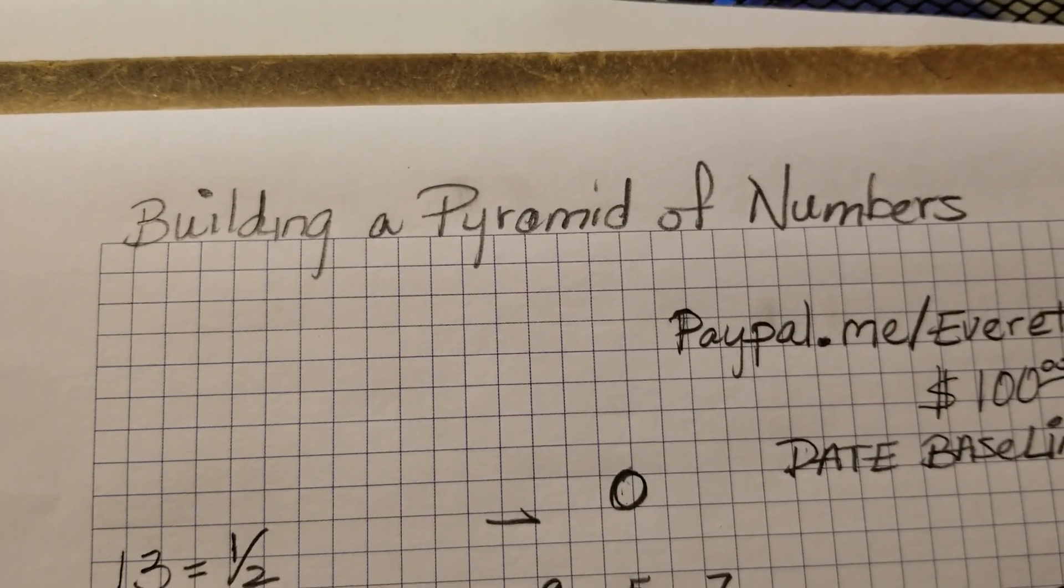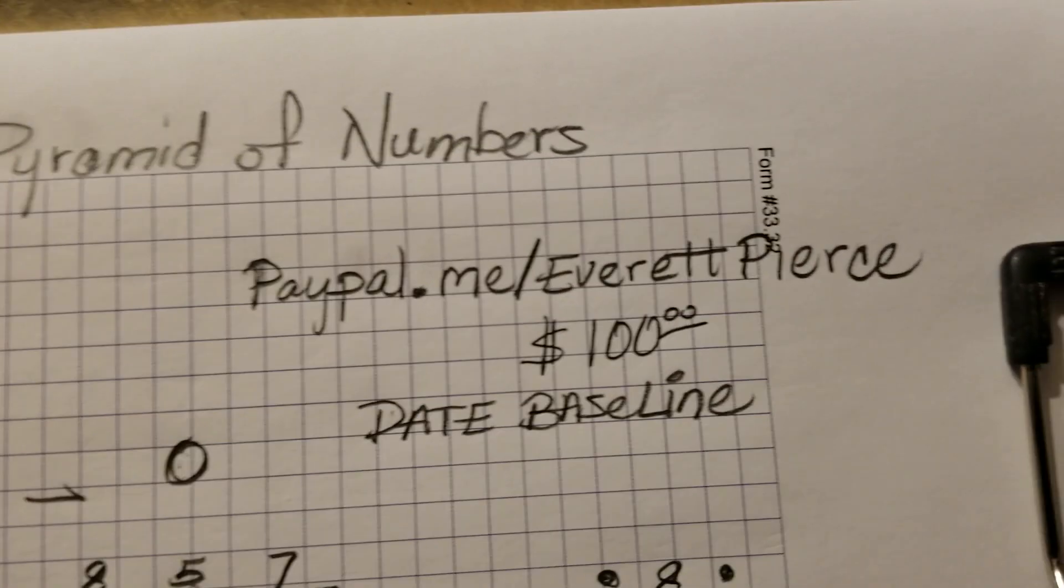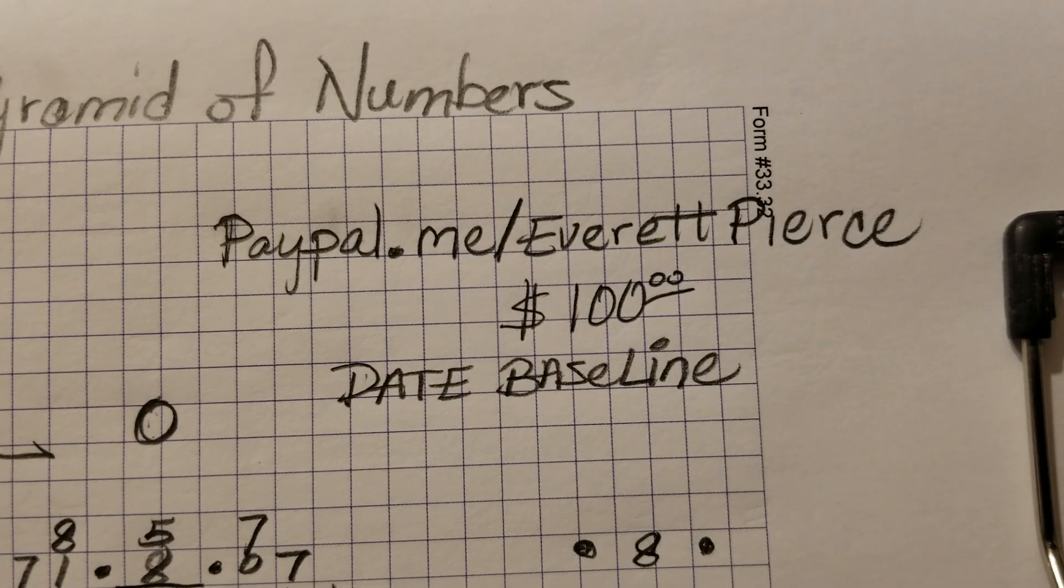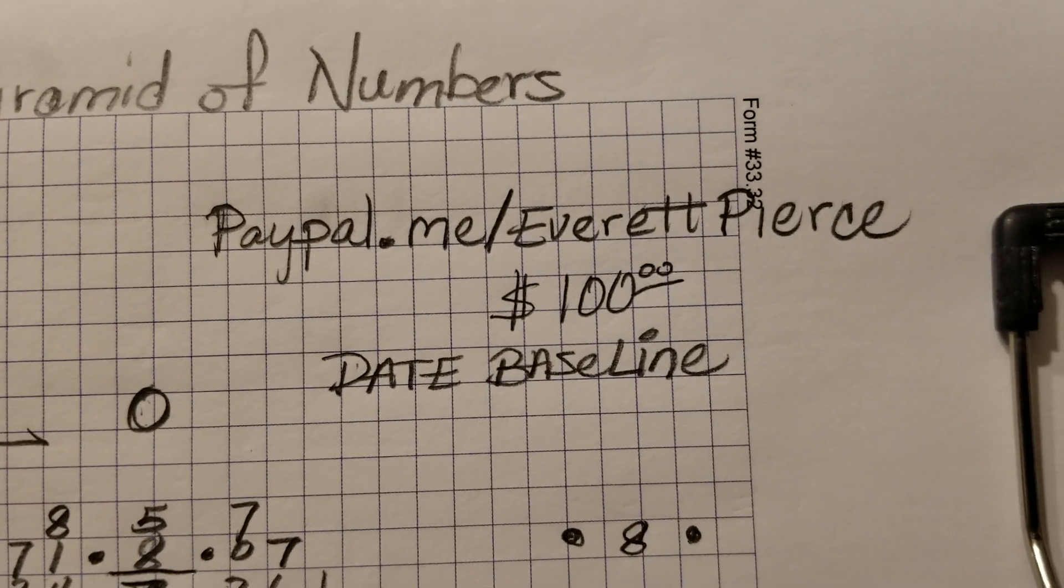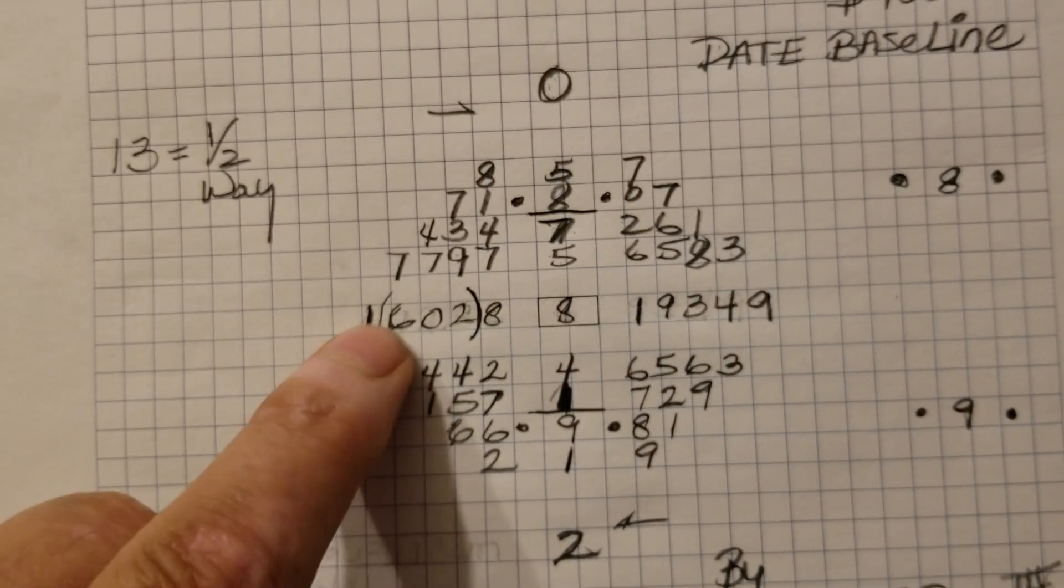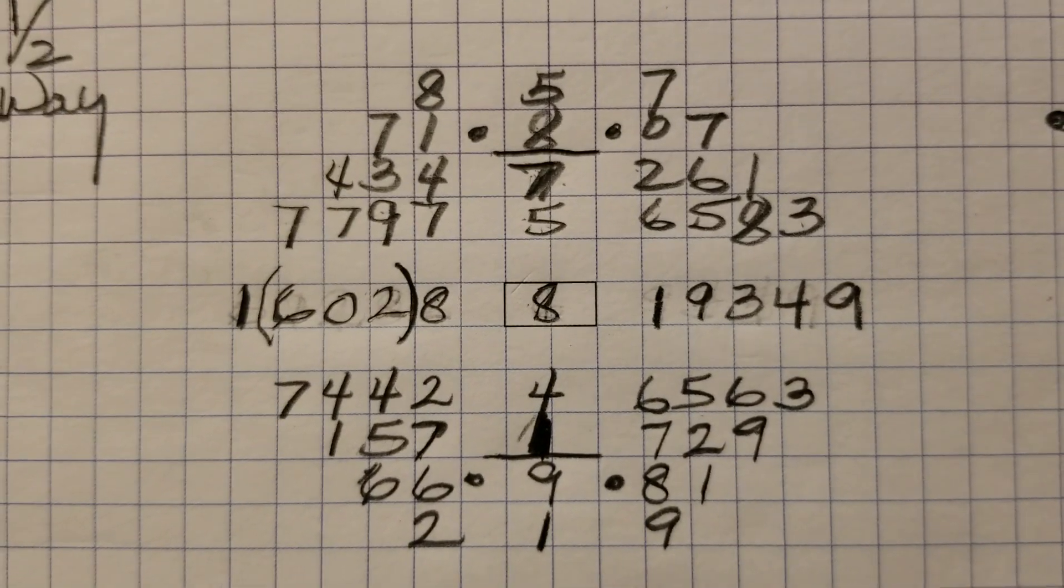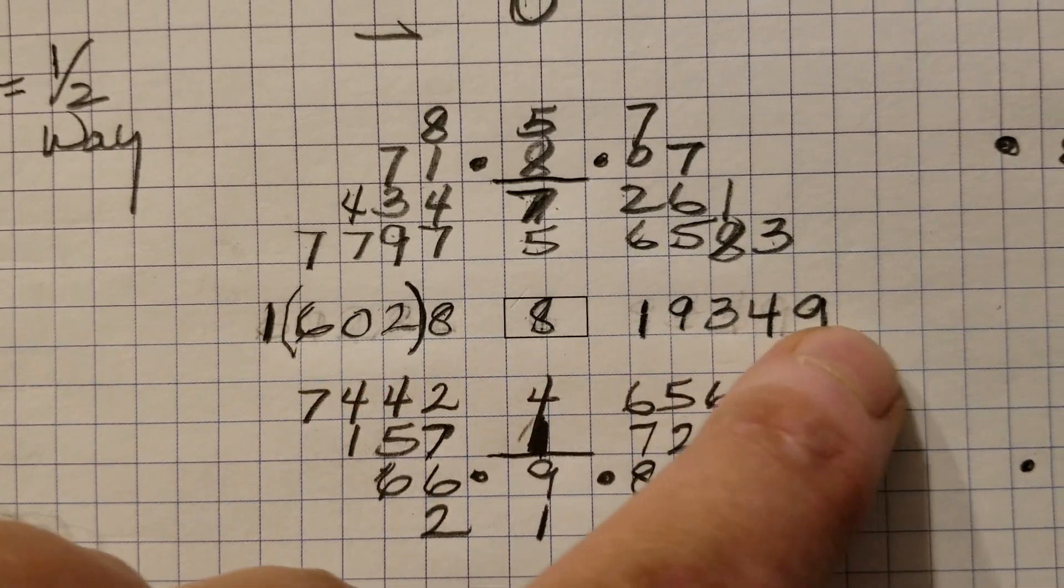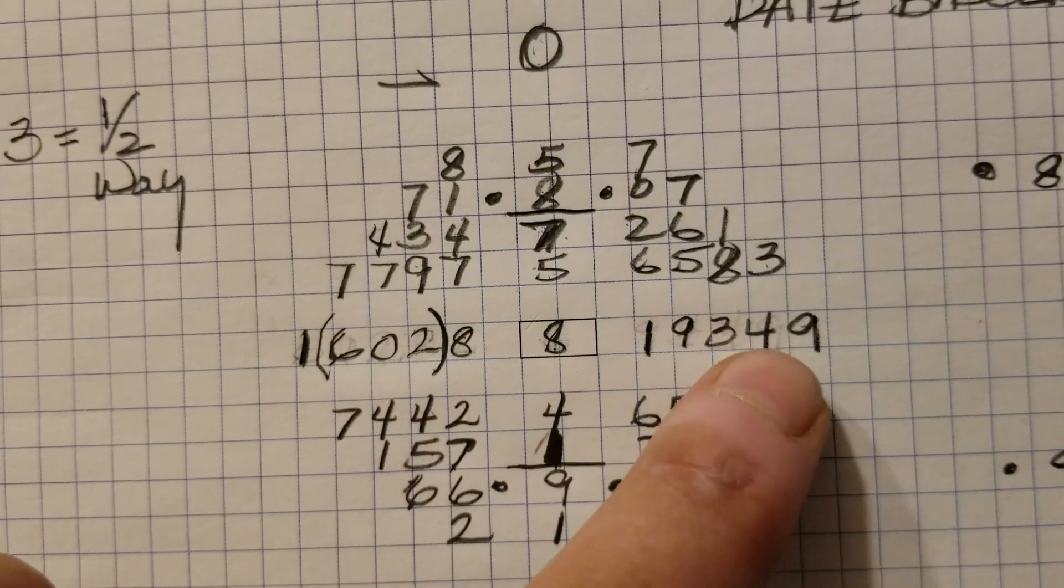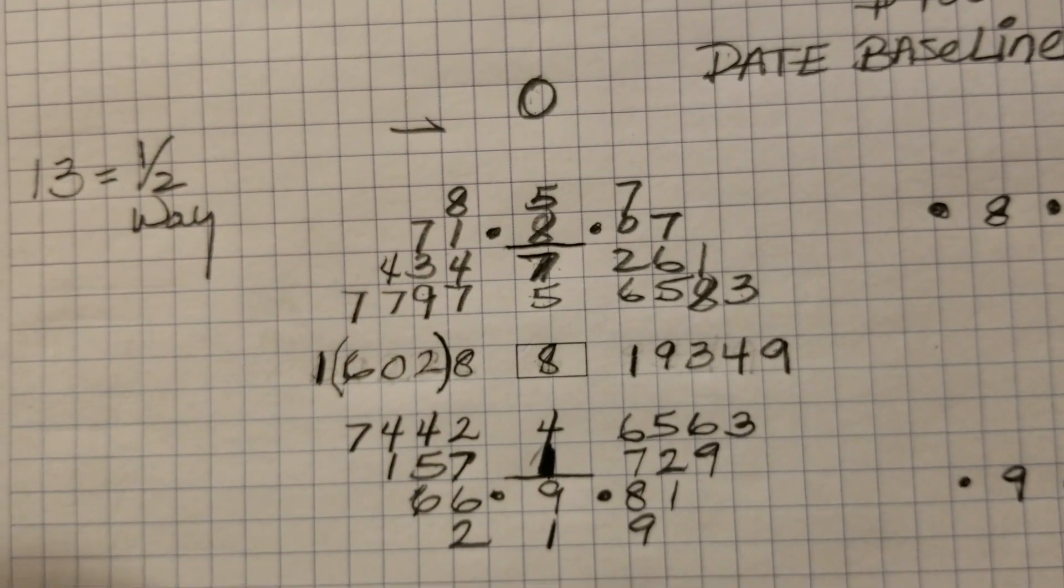Building a pyramid of numbers. It's real simple. And like I just said, you can go to paypal, send me $100, and we'll show you how to build your date baseline. Now, in this pyramid here, I just, as you can see, I just used the numbers of my phone number. And just for the sake of just teaching, it's smaller, and it'll give you an idea what we are doing.